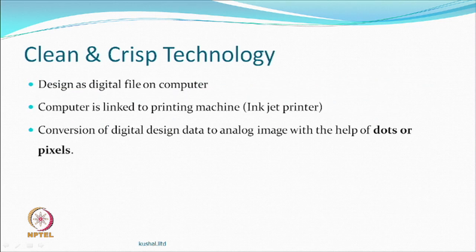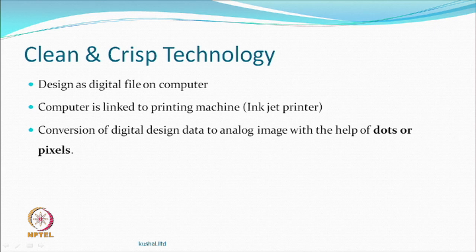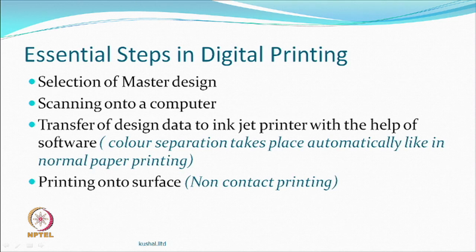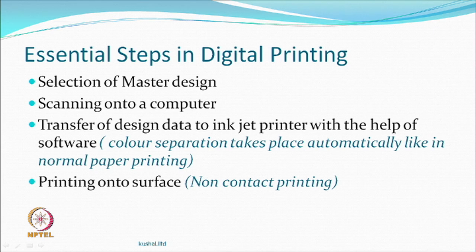It is a crisp and clean technology. All you require is a file on a computer linked to a printing machine called an inkjet printer. The design data or image is basically pixels on the screen and dots on the textiles. You are actually printing dots. You select a design, scan it with a good scanner, and connect to software — the softwares are becoming smarter. Direct printing only is used because it is very difficult to incorporate all kinds of chemicals into the ink of a printer.